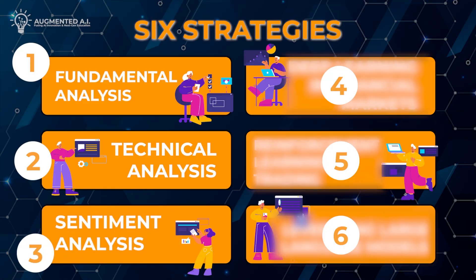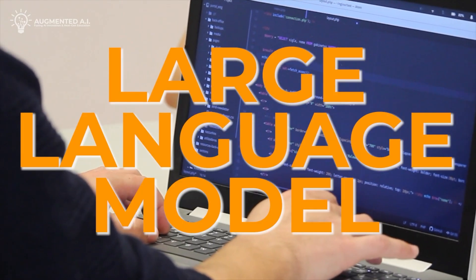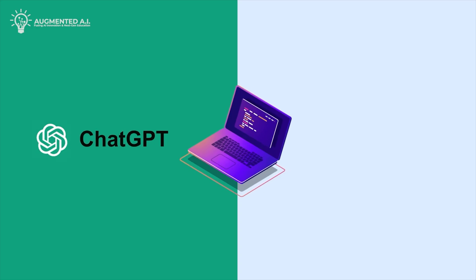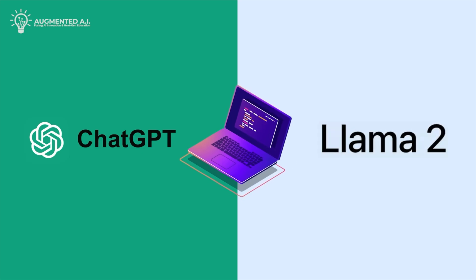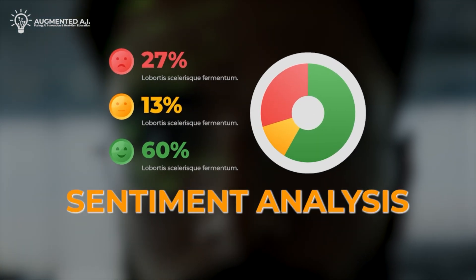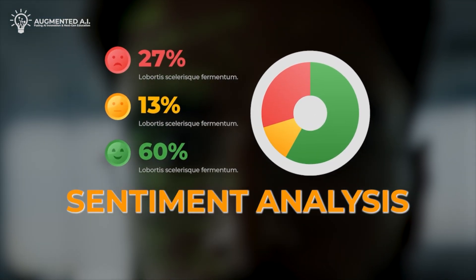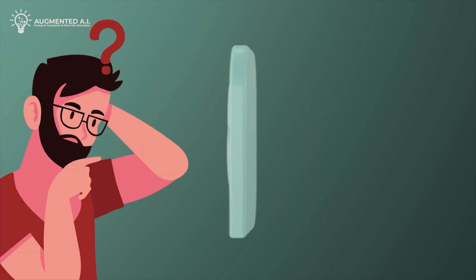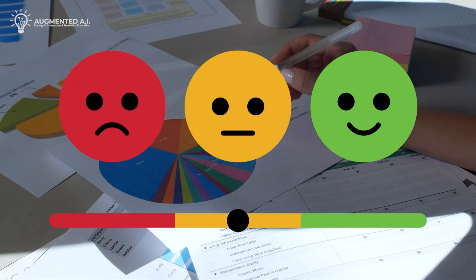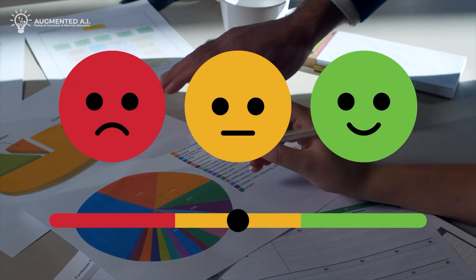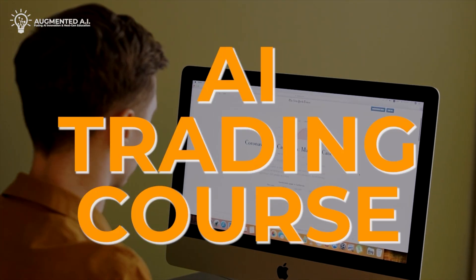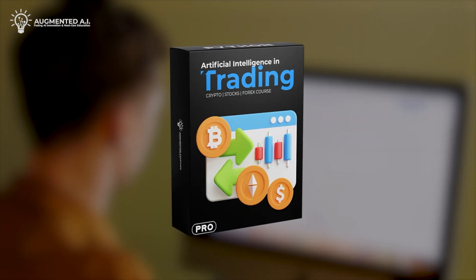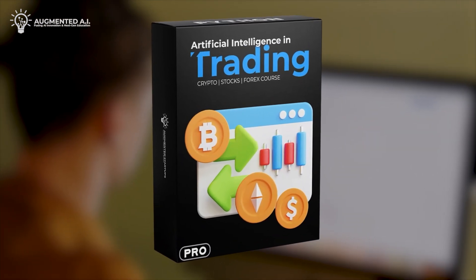Next is Strategy 3: Sentiment Analysis. We've innovated by using large language models like ChatGPT and Llama2 as an alternative to traditional sentiment analysis methods. Is ChatGPT better than traditional NLP for sentiment analysis? You'll find surprising insights and comparisons in our AI trading course. Check the link below to learn more in the free AI in Trading Nano course.